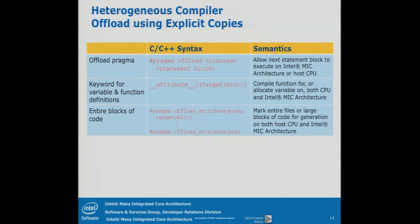The first thing is pragma offload, then the clauses, and then a standard statement block — either a single statement in C or something in curly braces. We have a function attribute that you can add to functions you want to call from an offload. It's cumbersome to add that to 500 or 1,000 functions, but we also have a pragma to push and pop the function attribute to the compilation stack.